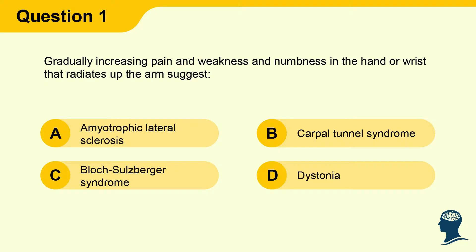Question 1: Gradually increasing pain, weakness, and numbness in the hand or wrist that radiates up the arm suggests: A) Amyotrophic lateral sclerosis, B) Carpal tunnel syndrome, C) Bloch-Sulzberger syndrome, D) Dystonia.